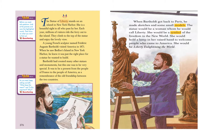She is a beautiful sight to all who pass by her. Who is she? Liberty, the statue. Why do they call her she? Because it is in the shape of a woman who is holding a torch and a tablet, and it is a symbol of freedom. Each year, millions of visitors ride the ferry out to the island. They climb to the top of the statue. A ferry is a small boat that takes people from the harbor in New York to the island where the statue is.